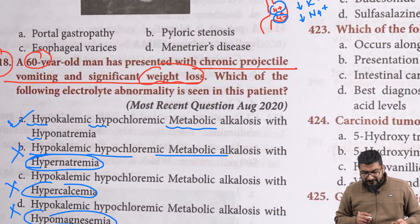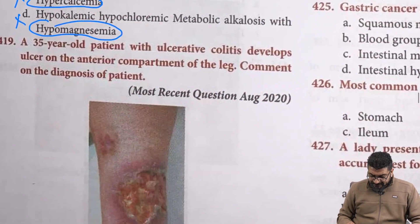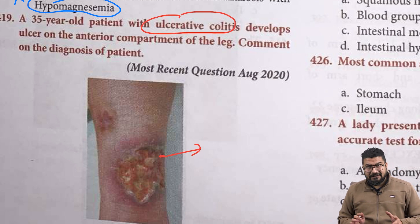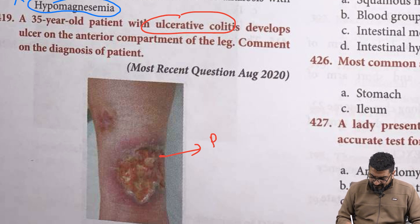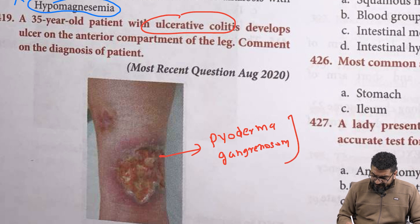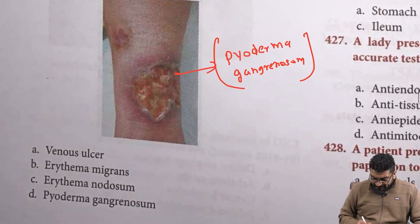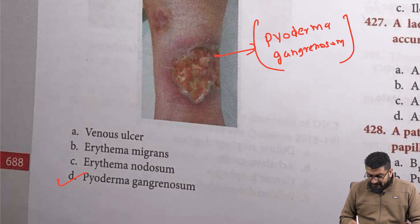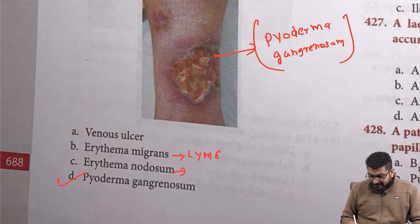A 35-year-old patient with ulcerative colitis presents with a skin lesion shown in the image. This is a spotter question — the lesion is pyoderma gangrenosum, a complication seen in ulcerative colitis. Venous ulcers occur in the gaiter's area; erythema migrans is a complication of Lyme disease; erythema nodosum is a non-specific manifestation seen in many conditions including drug side effects and sarcoidosis.